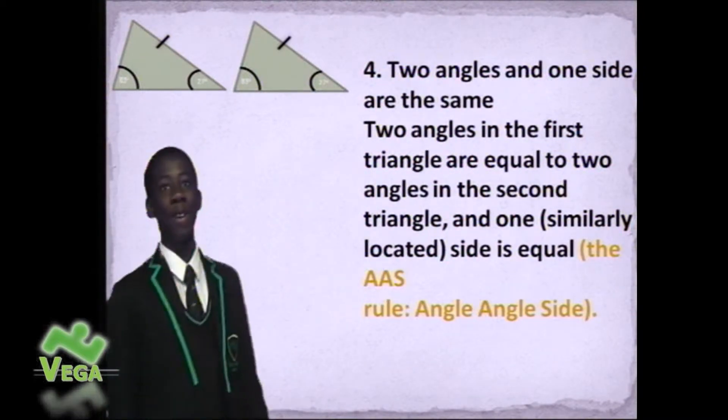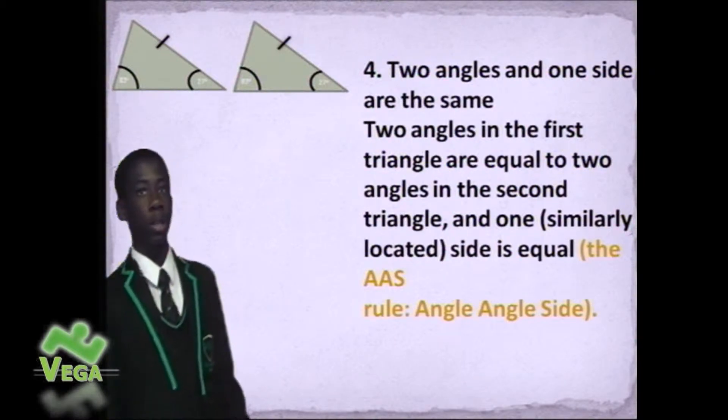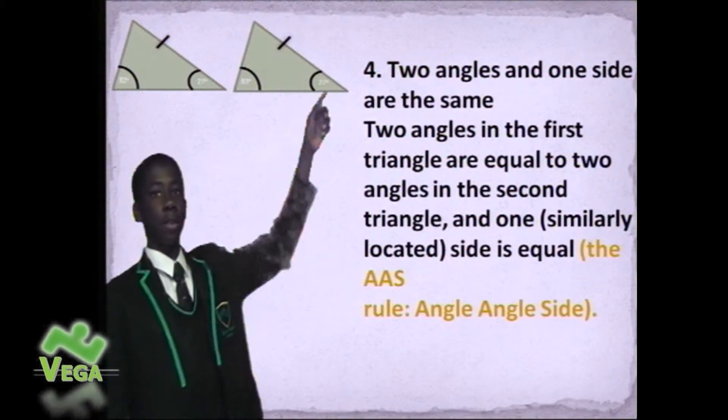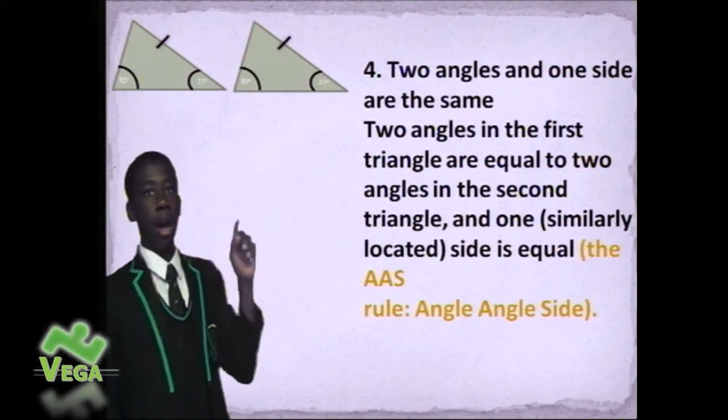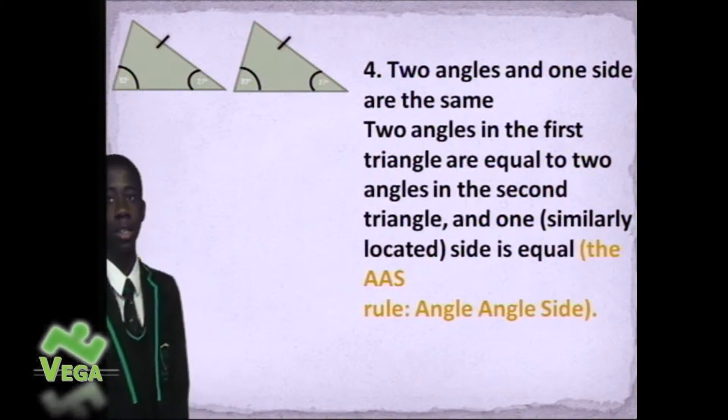The final rule of congruence is the AAS rule, where the two angles opposite each other are the same, and so is the side. This is the AAS rule of congruence.